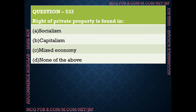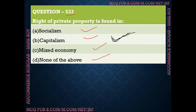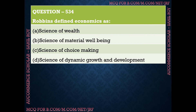Question number 533: The right of private property is found in which type of economy? Options are: socialism, capitalism, mixed economy, or none of the above. The correct answer is option B — capitalism. In capitalistic economies, which most developed nations like the USA and Japan follow, most things are privatized. So the right of private property is found in capitalism.